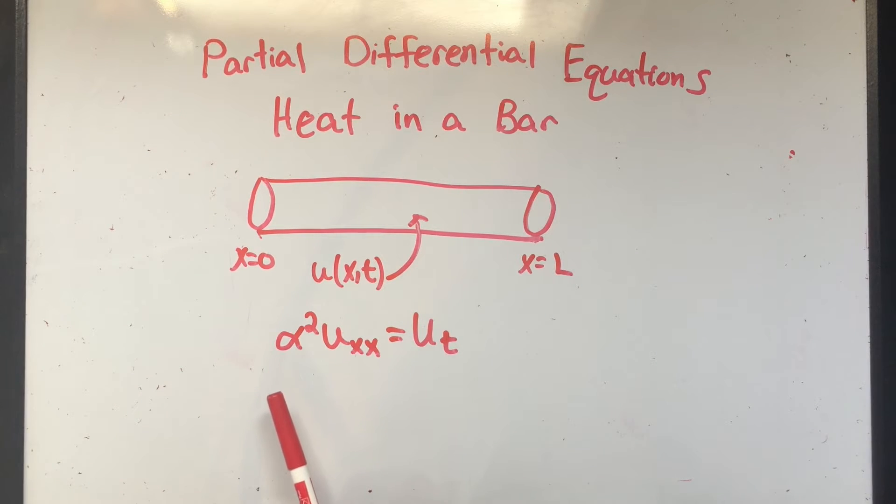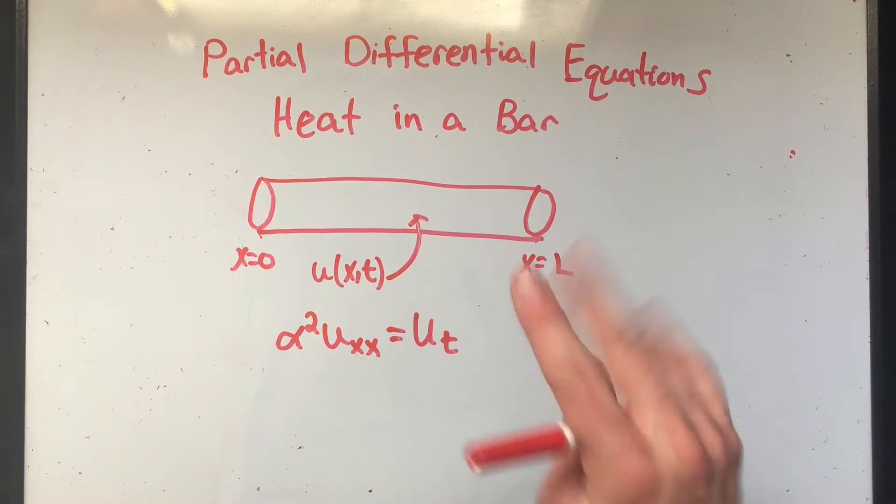So alpha squared. This is called, if I'm going to say this right, diffusivity constant. Anyway, alpha is a number. Basically tells you like how fast heat disperses through the material. So for example, silver has a diffusivity of 1.71 centimeters squared per second. Water has an alpha squared of 0.00144 centimeters squared per second. So not very much, I guess.